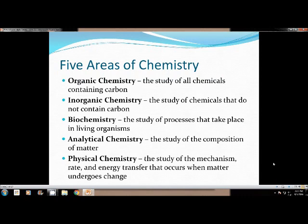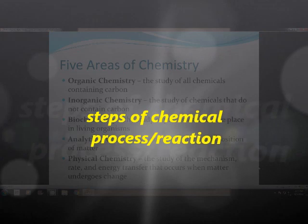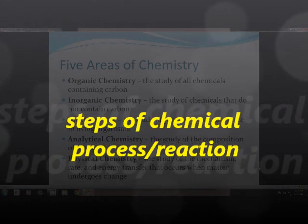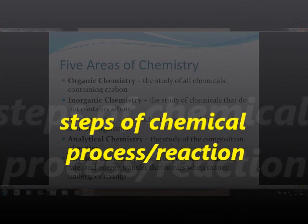The last area is physical chemistry. Physical chemistry is the study of the mechanism, rate, and energy transfer that occurs when matter undergoes change. Mechanism, rate, and energy transfer are the three key words. Maybe circle those in your note to help you figure out what is going to be physical chemistry. The best example I have for you is the chemical process steps for a chemical reaction. So what steps does the chemical reaction go through?